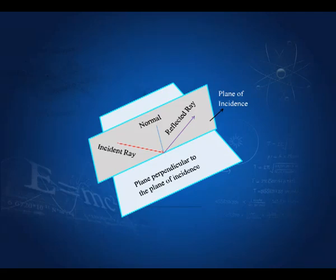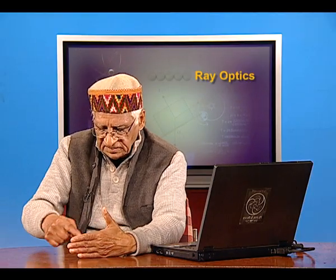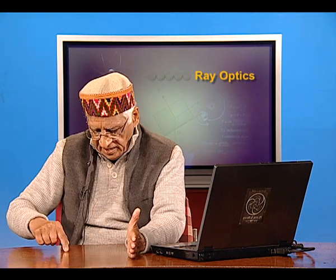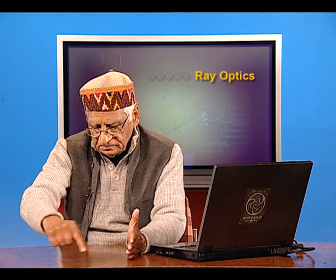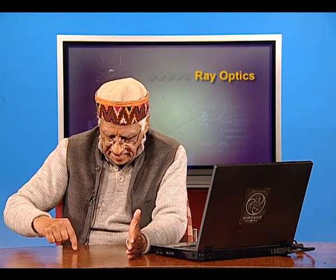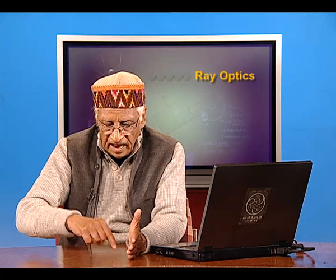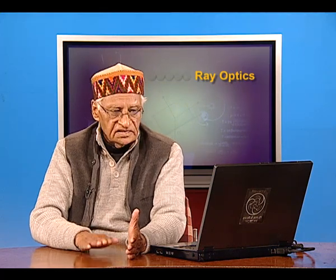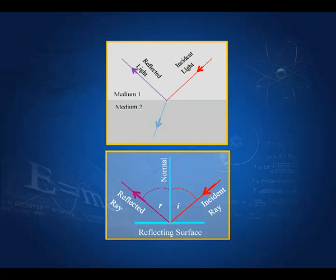The other law governing reflection is that the incident ray, the reflected ray, and the normal at the point of incidence all lie in the same plane. That is the content of the second law of reflection. Moreover, if the angle of incidence i is 0, then the angle of reflection r is also 0 — any light incident normally on the surface is reflected back along the same path.